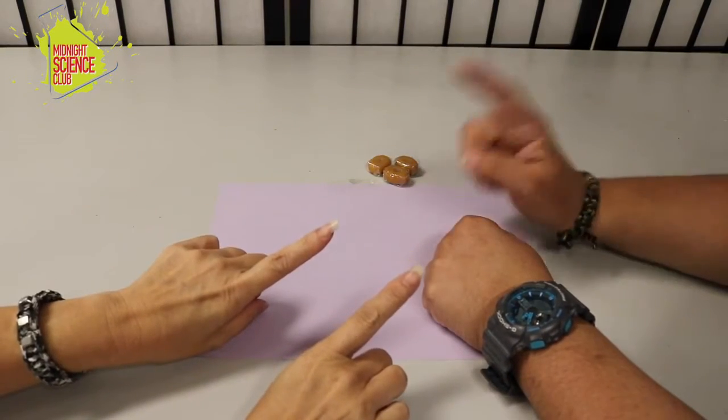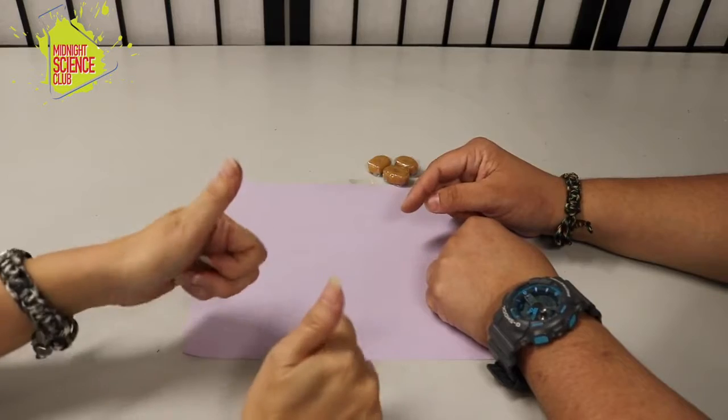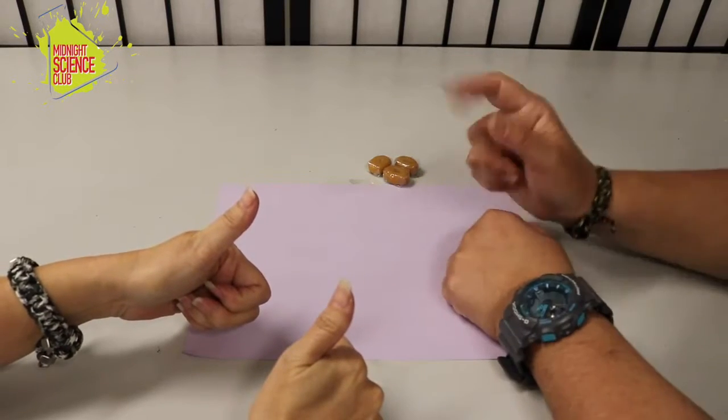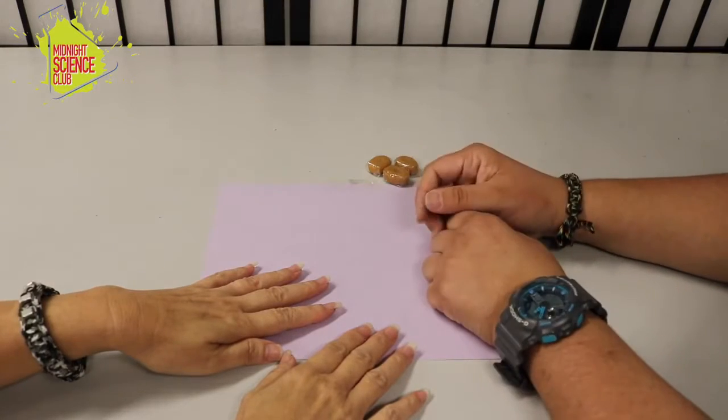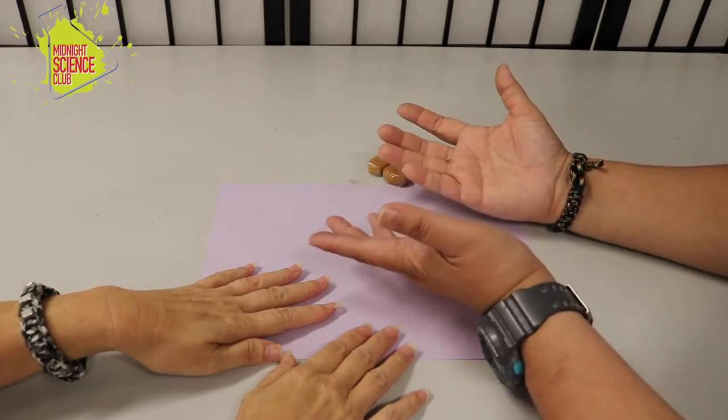All right, but before we start gotta make sure we always ask for permission from an adult especially when we're using supplies. Very important to ask for permission for this activity because we're going to be using some supplies that you may have in your kitchen or even your garage.